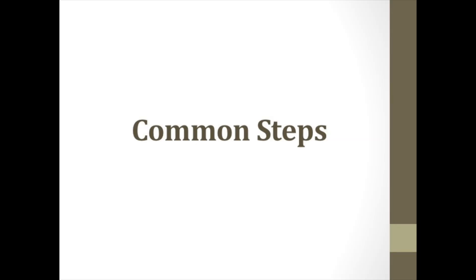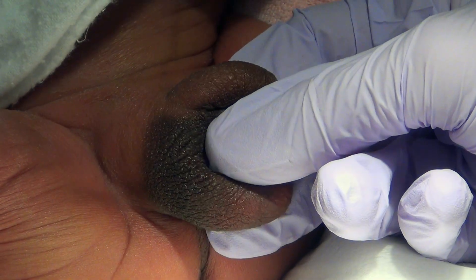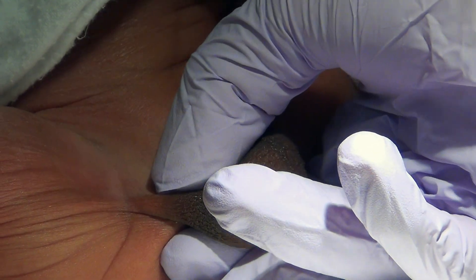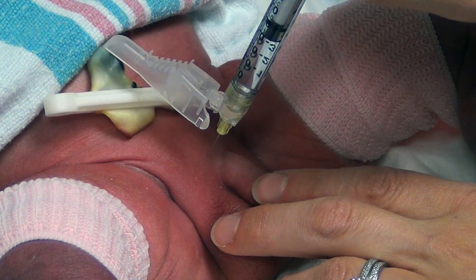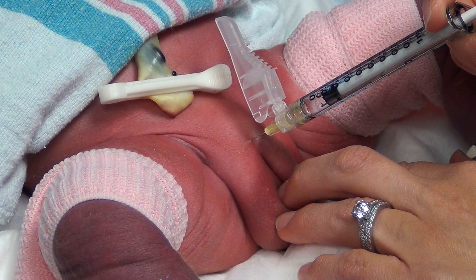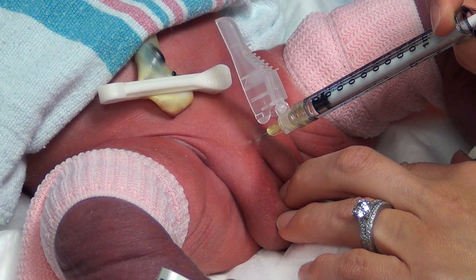The first steps of the procedure are common to use of both the Mogan and Gomco clamps. The neonatal genitalia is briefly inspected for an absence of hypospadias and bilaterally descended testes. An antiseptic swab is then used to cleanse the skin at the base of the penis. Installation of 1% lidocaine without epinephrine is used to perform a dorsal nerve block at the 10 o'clock and 2 o'clock positions at the base of the penis.